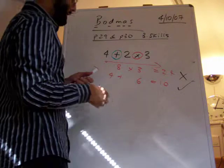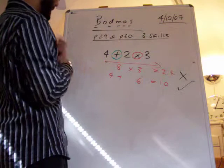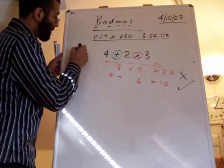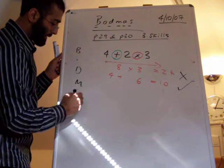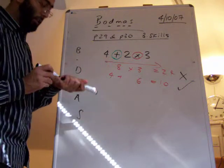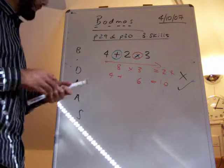Now if you look at BODMAS itself, B, D, M, A, S. Now this tells us the order in which we do calculations.